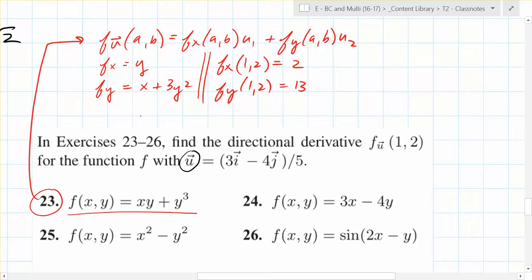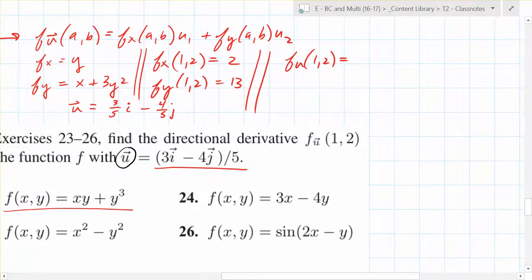And then what's our directional derivative? Well, we don't really like writing it like that. What's a better way to write it that would help us a little bit? 3 over 5 i plus—oh, minus 4 over 5 j, right? So now we just have to plug everything in the right place. So if we plug stuff in now, what do we end up with? We end up with f_u at (1,2). It never gets old. Equals what? What's f_x at (1,2)? 2 times 3 fifths, right? Plus what? 13 times negative 4 over 5, like that?